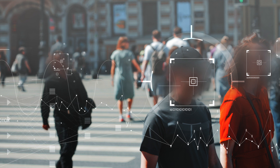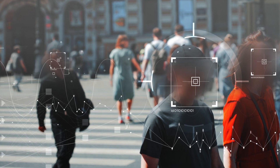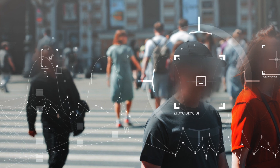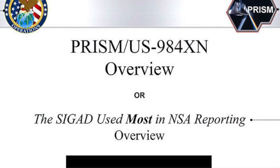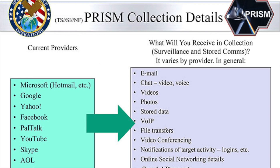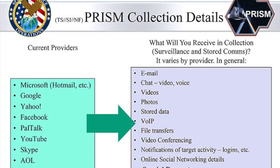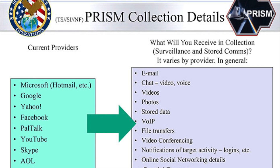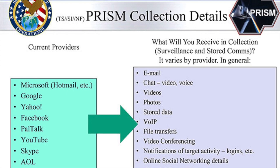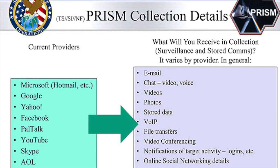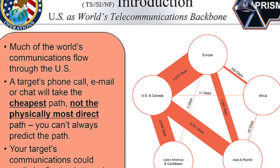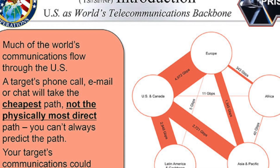Following the Verizon scandal, Edward Snowden released details of the NSA program PRISM. PRISM is a tool used by the U.S. NSA to collect private electronic data belonging to users of major internet services such as Gmail, Facebook, Outlook, and others. It is believed to involve the cooperation of at least nine technology companies, with these companies giving direct access to their systems.